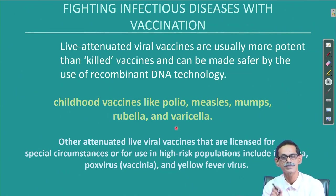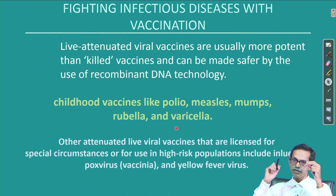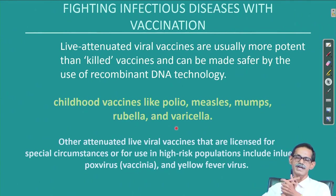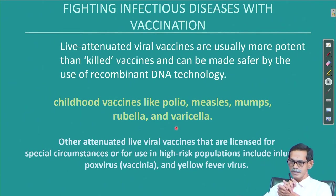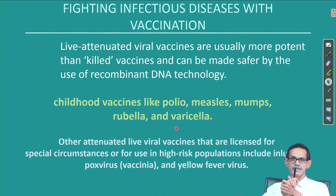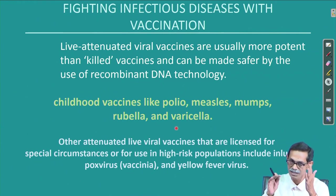Other live attenuated viral vaccines are licensed for special circumstances for high-risk populations — poxvirus, yellow fever virus in some cases — because when using vaccines we are assuming the individual to be vaccinated is immunologically perfect. That is not always true. Many people are immunocompromised for many reasons — effects of immunosuppressive drugs, mutational diseases, or HIV infection where their immune system is already down and their T cells and B cells are not working properly. Vaccine is only for individuals who have a good or at least moderate immune system.